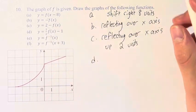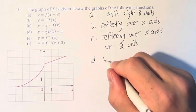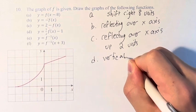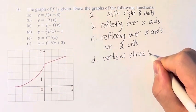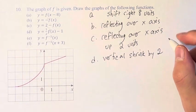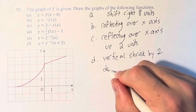For part d, we are multiplying by 1/2, so that is a vertical shrink by a factor of 2 since it's being done outside of the function. And then we subtract 1, so we're going down 1 unit.